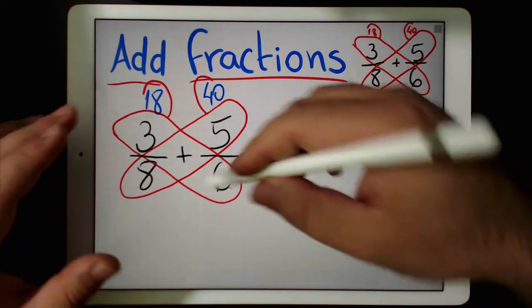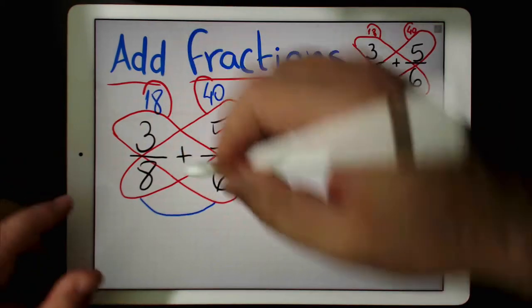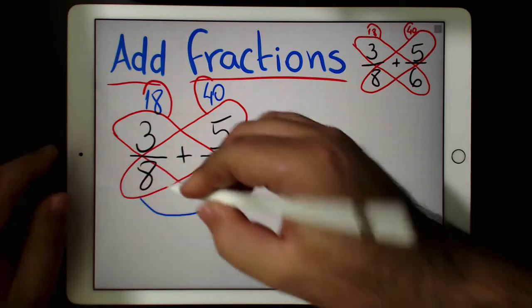This way here. And the new denominator is going to be the multiplication between the 8 and the 6. So 8 times 6 is 48.